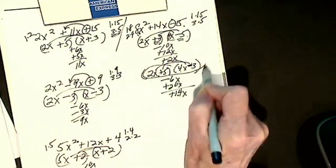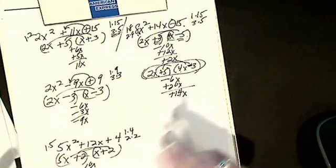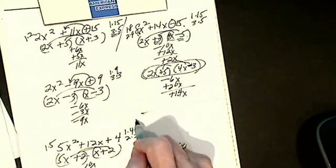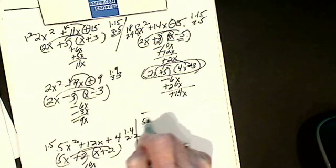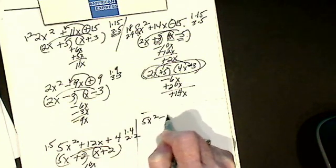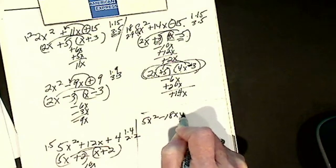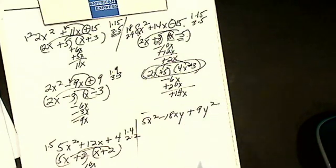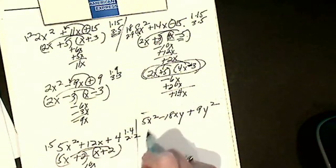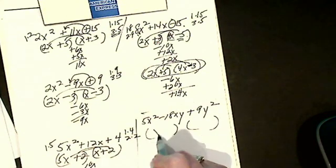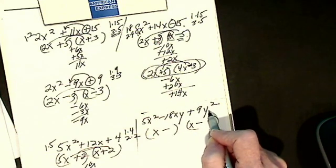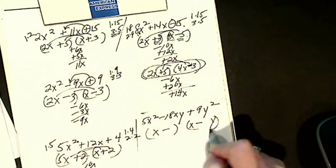We'll try one more. Let's say I have one like this. 5x squared minus 18xy plus 9y squared. I factor. x, x, minus, minus. This one has y squared. I'll put in my y's.